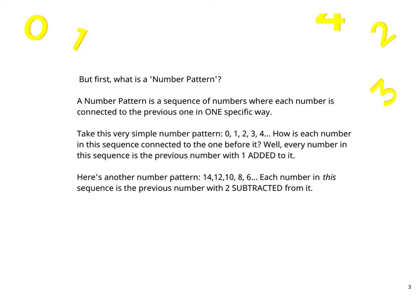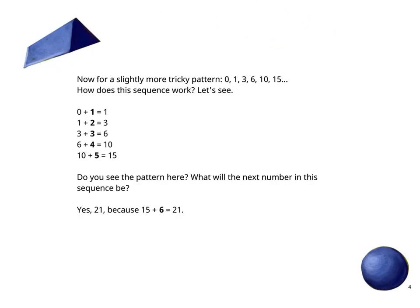Here is another number pattern: 14, 12, 10, 8, 6. Each number in this sequence is the previous number with 2 subtracted from it. Now for a slightly more tricky pattern: 0, 1, 3, 6, 10, 15. How does this sequence work? Let's see: 0 + 1 = 1, then 1 + 2 = 3, 3 + 3 = 6, 6 + 4 = 10, 10 + 5 = 15.